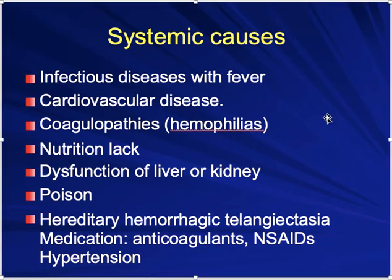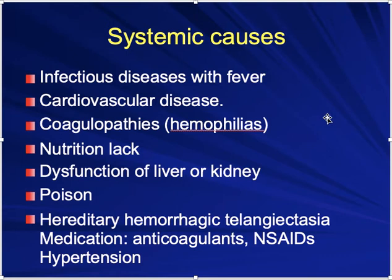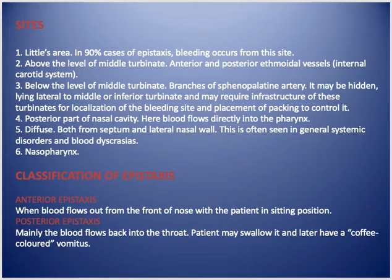When taking history for epistaxis, most of the time the cause is trauma. In elderly patients without an obvious cause, a complete history is needed. Angiofibroma is a tumor common in young adolescent males — it looks like a polyp but bleeds easily when touched because it is made of vessels. A CT scan is done to assess its extent before surgery.